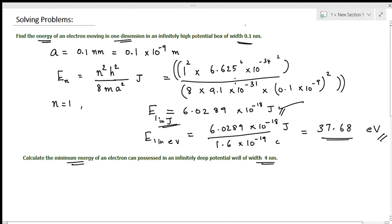Previously it was 0.1 nanometer, now it is 4 nanometer. Minimum energy means the n value should be considered as 1. If you substitute it, you will get the energy value called minimum energy of the electron. Lowest energy and minimum energy are the same.